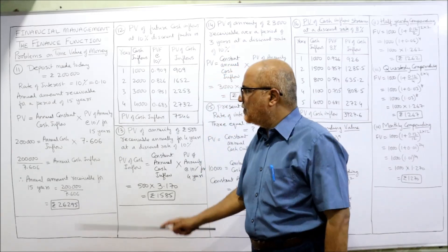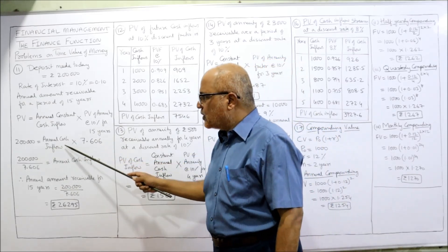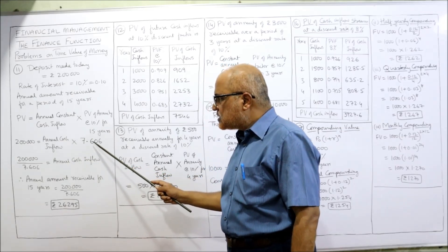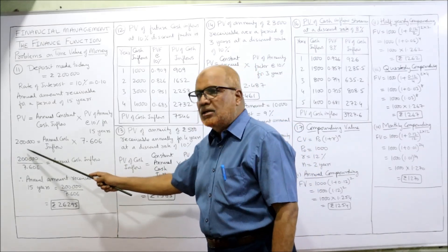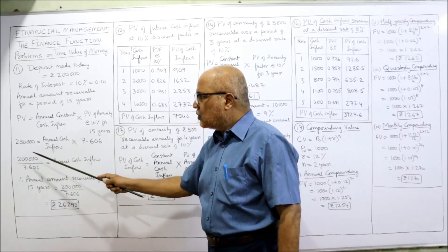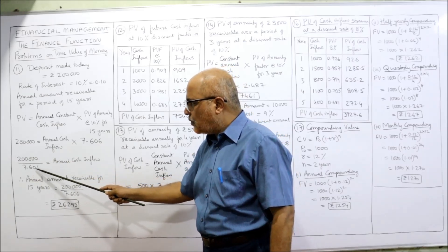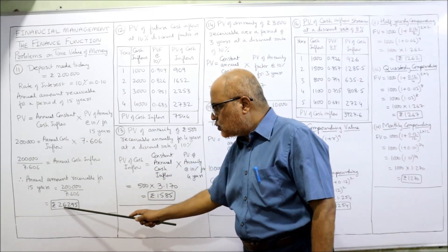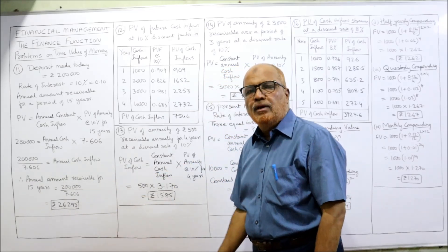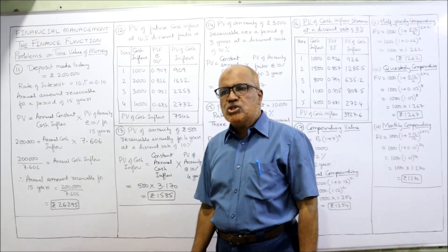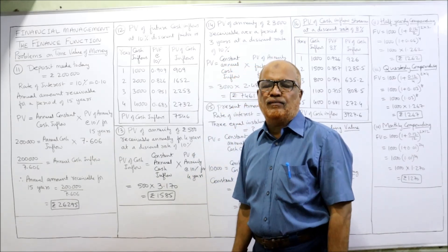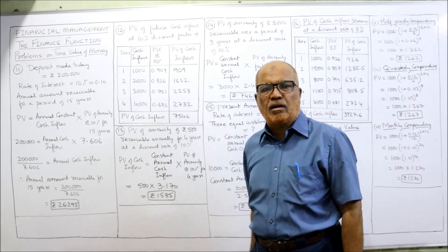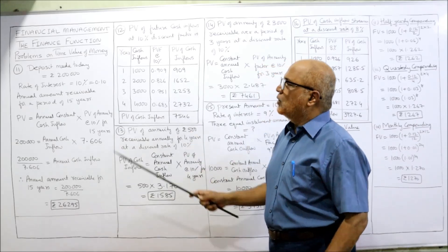In this equation, the annual cash inflow is unknown. Bring 7.606 to the left-hand side, so the multiplication becomes division: 2 lakh divided by 7.606 = 26,295. So annually, Mahesh will get 26,295 rupees every year for a period of 15 years if he deposits 2 lakh rupees right now.